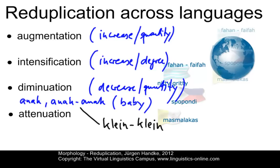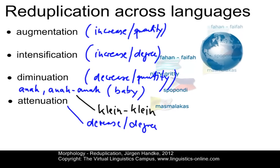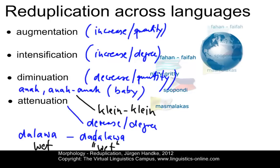The final category is attenuation — the decrease of degree, the opposite of adjectival gradation. An example often used in the literature is 'dalawa', a word meaning 'wet' in Tagalog, a language spoken in the Philippines. If I partially reduplicate that word, I get 'da-dalawa', which means 'somewhat' or 'a little bit wet'. Among the world's languages, the tendency is to use reduplication mainly to express increase rather than decrease.